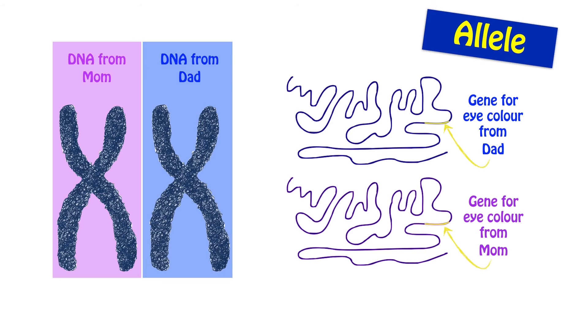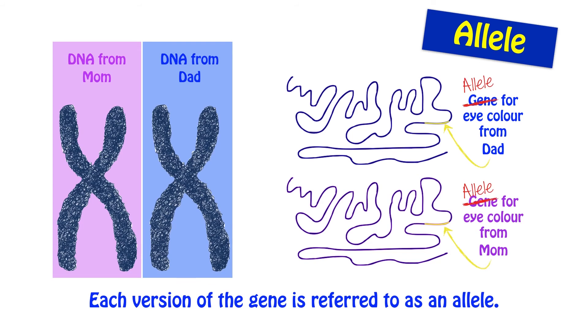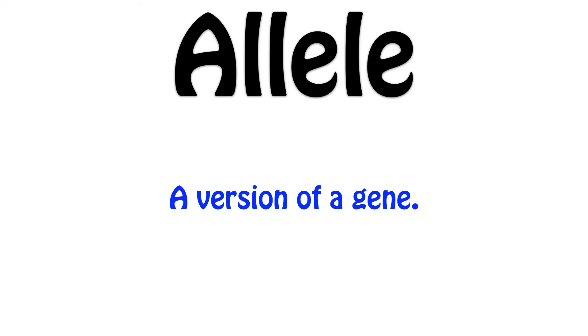But in reality, this is actually slightly misleading. You don't really have two of every gene. You've actually got two versions of it. Each version is referred to as an allele. So, simply defined, an allele is nothing more than a version of a gene. It's not any more complicated than that.